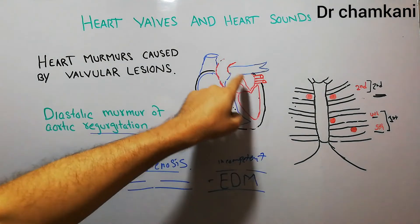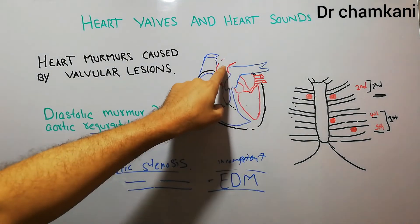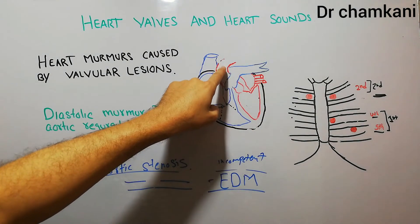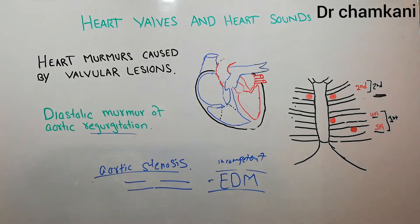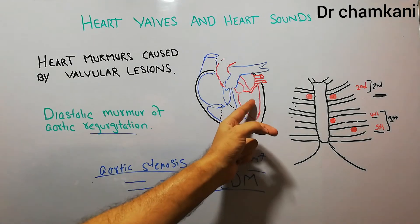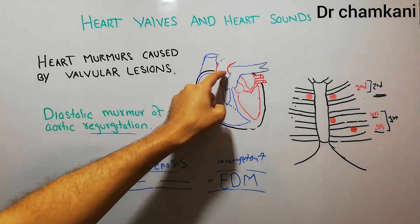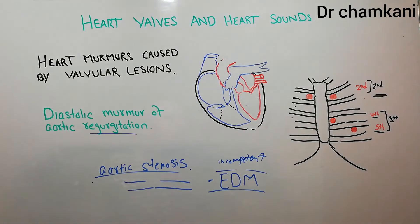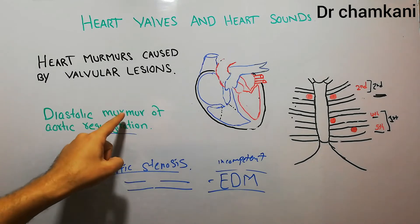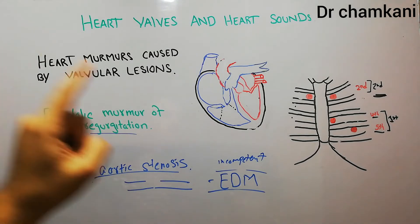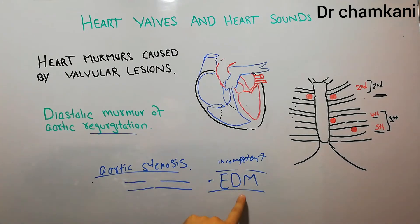If there is a problem with the valve, it will not be able to stop the movement of blood from the aorta into the left ventricle. As soon as the pressure in the left ventricle decreases, the blood will start moving back into the left ventricle. It will produce a sound which is known as a murmur, and this will be in the early diastole. That is why it is called an early diastolic murmur.